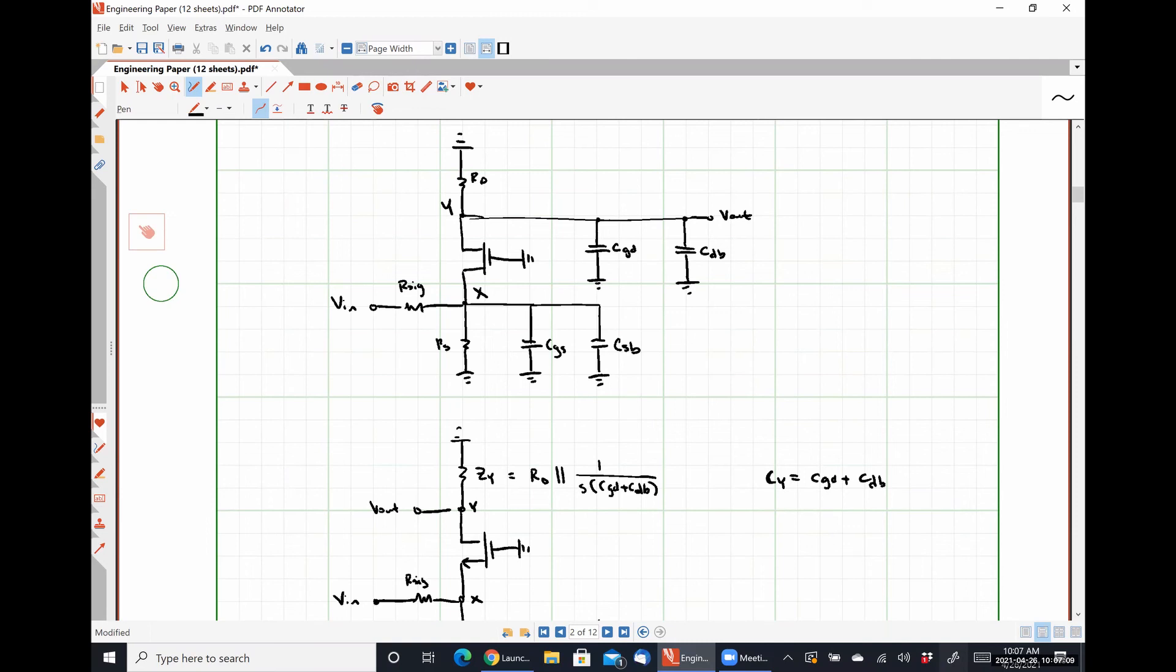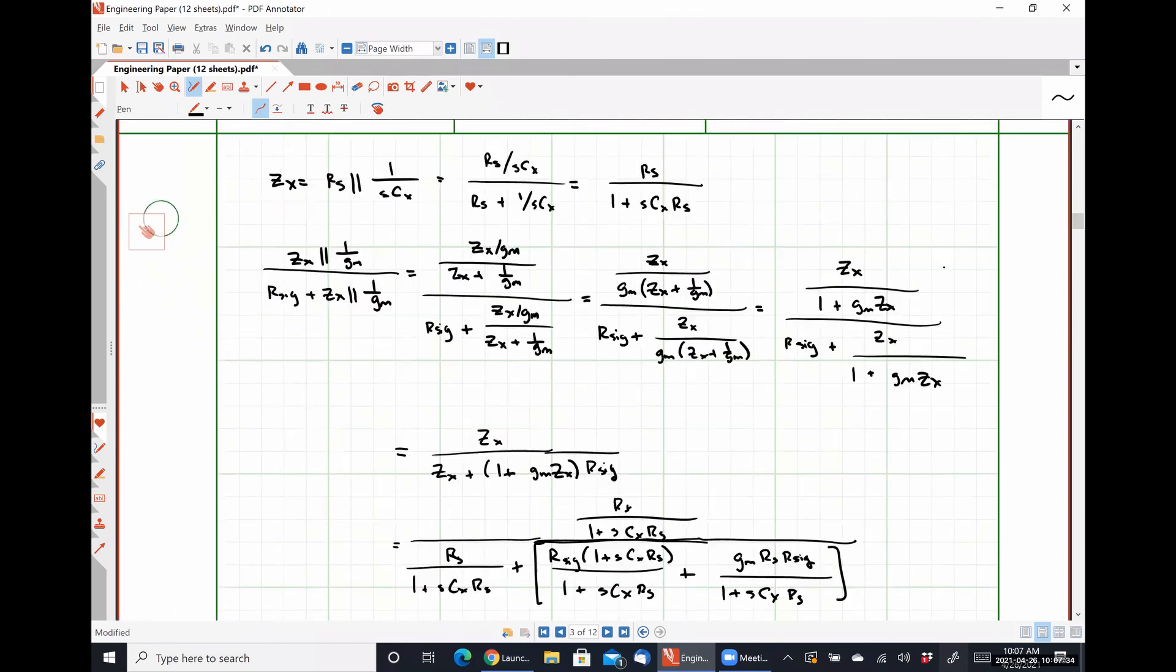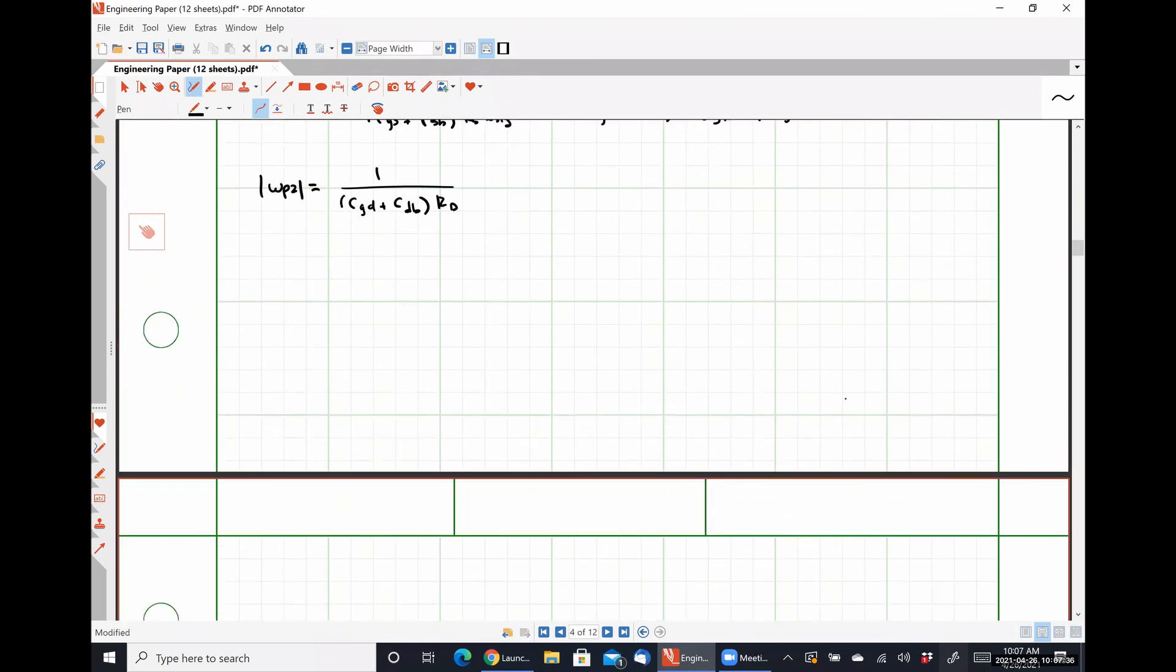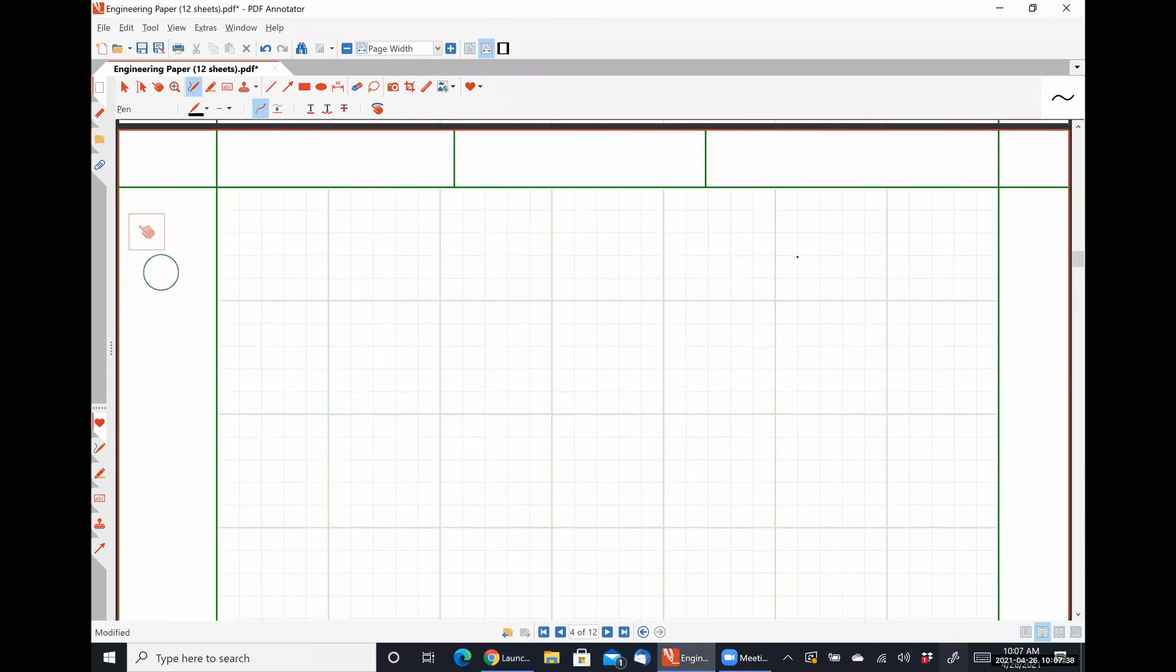So we can actually get those exact same pole results by effectively applying the method of open circuit time constant, meaning we know that one pole is going to occur at our output because we have a capacitance at our output that sees a particular resistance. And our second pole is going to occur at our input because our input capacitance CGS in parallel with CSB sees some other resistance. So just for the sake of argument, let's prove that to be true.